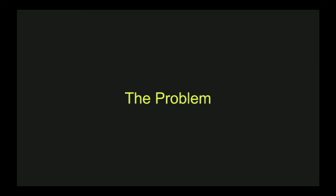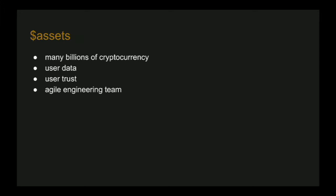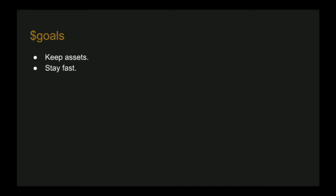Like any good case study, let's start with the problem statement. Coinbase has four assets we really care about: cryptocurrency — we have a lot of it that can be irrevocably lost; user data — we collect a lot and must keep it for a long time; user trust that we'll keep the first two safe; and an agile engineering team that embraces near-continuous delivery. With those four assets established, we have two basic goals: keep those assets, and keep the engineers moving fast.